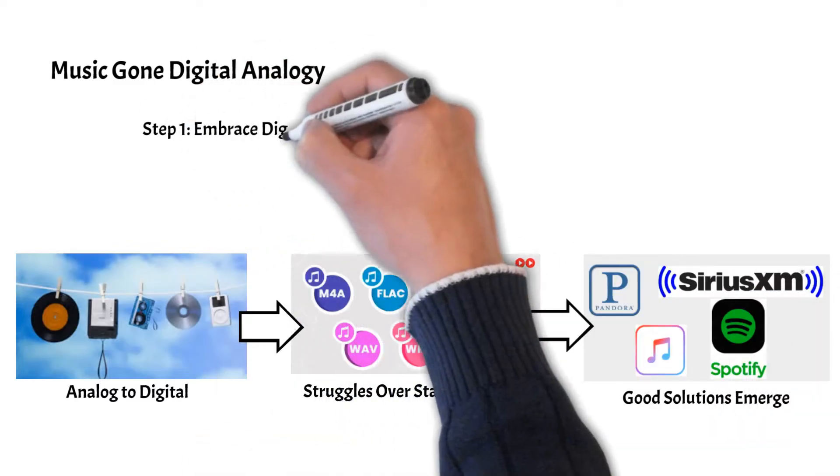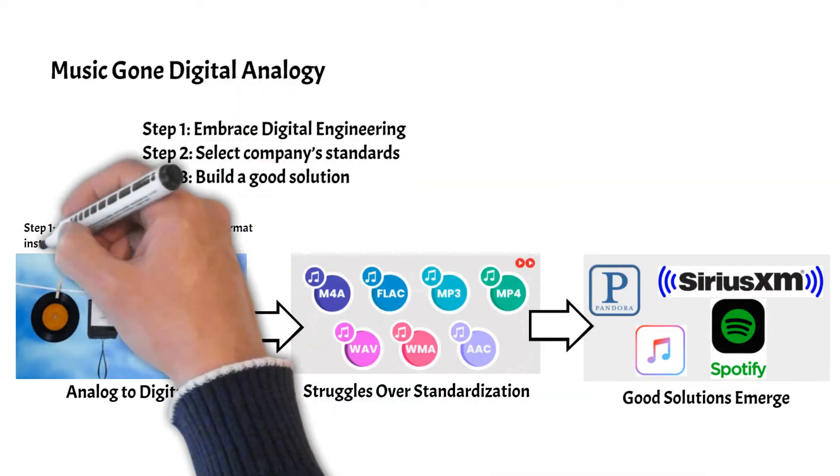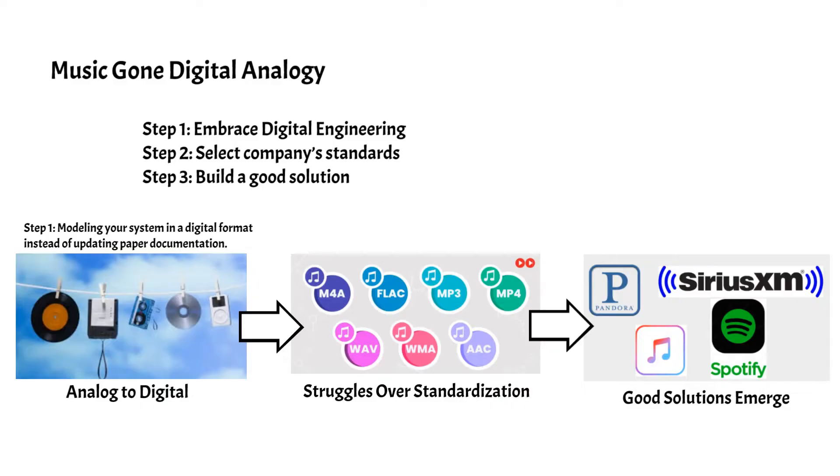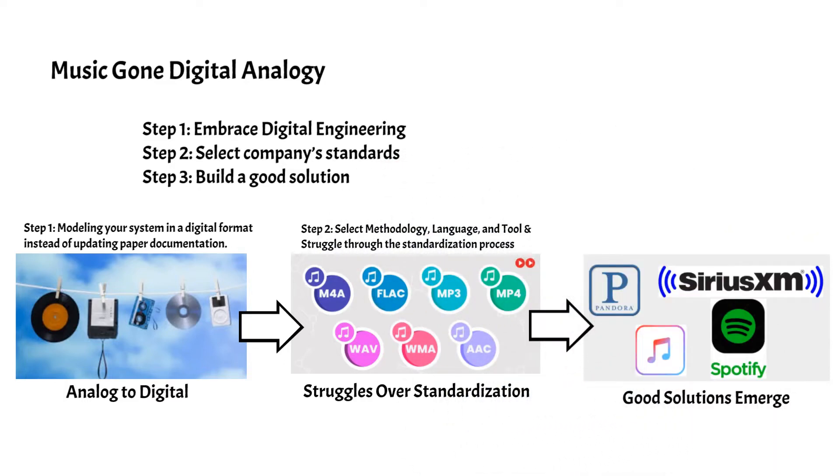There are three phases to the digital transformation. The first is the commitment to the transition from a document-based approach to a model-based approach. This requires leadership support and a cultural shift. The second is struggling over the discontinuities. Significant collaboration is essential to create a consistent and standardized methodology, language, and toolset.